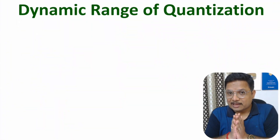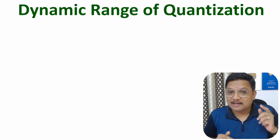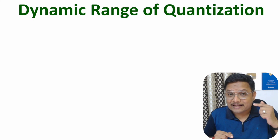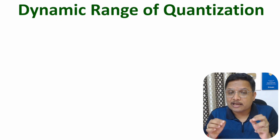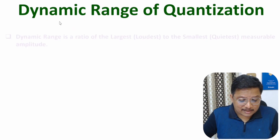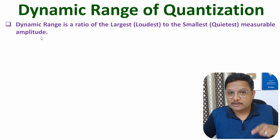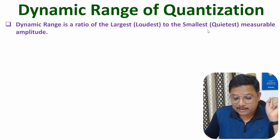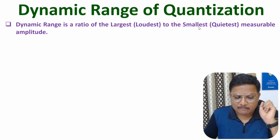Hello friends, welcome to Engineering Funder Family. In this video I will explain dynamic range of quantization. Based on dynamic range, one can understand how to perform quantization. First of all, let me explain the meaning of dynamic range. Dynamic range is a ratio of largest to the smallest measurable amplitude, so you need to understand what is the largest measurable amplitude and what is the smallest measurable amplitude.